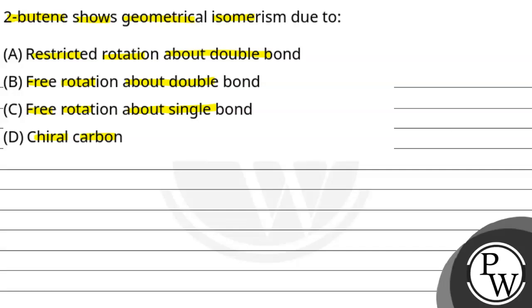So, the question is about 2-butyne showing geometrical isomerism. The key concept of this question is geometrical isomerism — geometrical isomers. So exactly what are geometrical isomers?